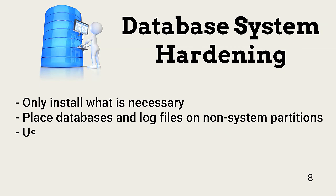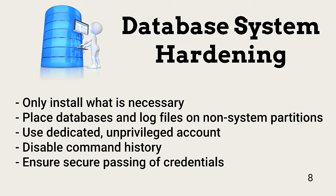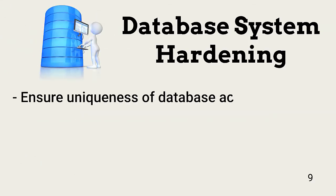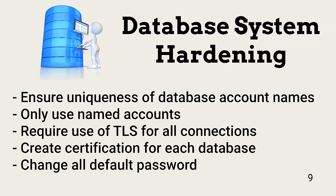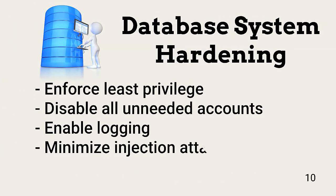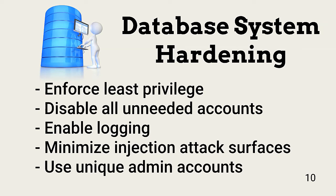Database system attack surface reduction is similar to basic server hardening. It begins by installing only what is needed to perform the database operations. Access to database services should use a unique, named, and unprivileged account. The server should not maintain command history, and the passing of credentials should not be done in plain text. Each account accessing the database should be unique, and no use of shared accounts should be allowed. TLS or IPsec should encrypt all connections to the database server. Default accounts should be disabled or their default passwords changed. As with all systems, least privilege is important — accounts should only have the permissions and privilege level needed for daily operation. Detection of threat actions needs effective logging. Finally, all input should be validated to prevent injection attacks.